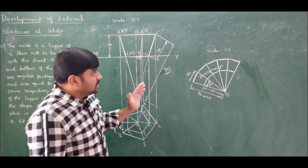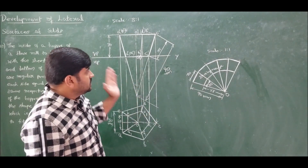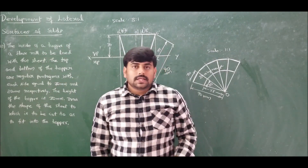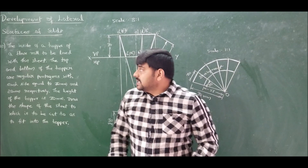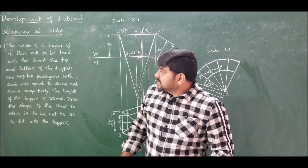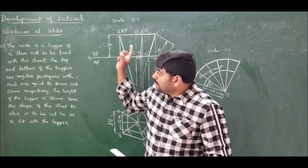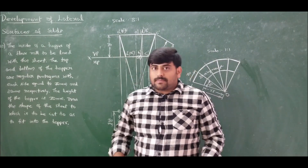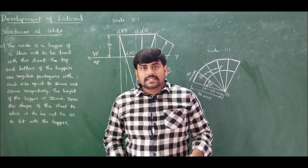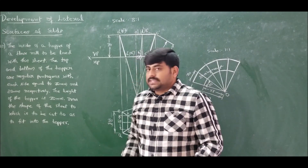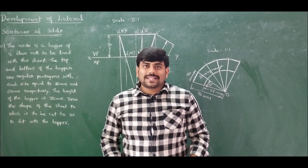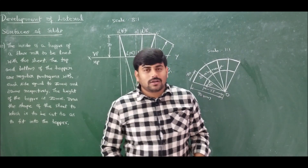The concept is clear — this is how we solve for a hopper. Here we had a pentagonal hopper with both top and bottom faces as pentagons. You can also try the same problem with a hexagon. That's all from this lecture. Thank you.